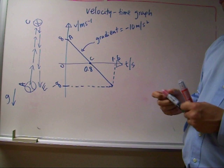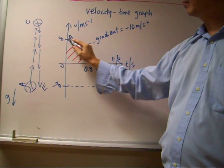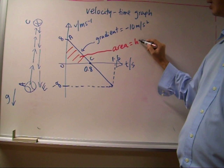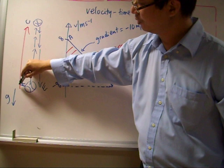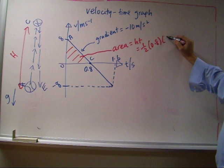Now we can also find the height that it has reached the top. From A to C, the area under this is actually the height, the maximum height that it has gone. So that means this height, h, is actually the area, which is half times 0.8 times 8 meters.